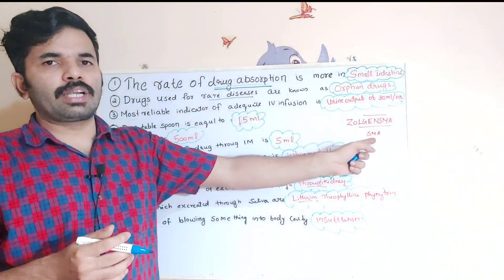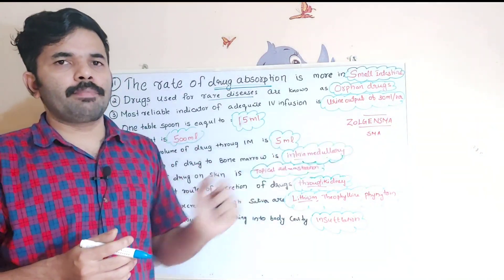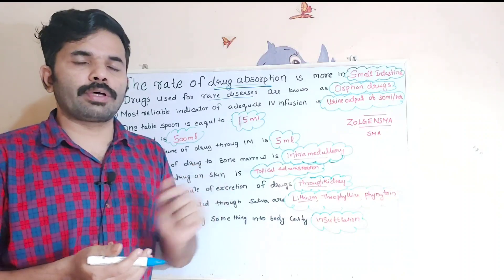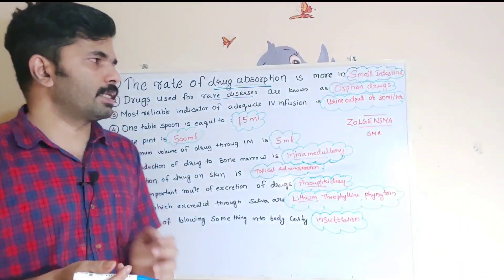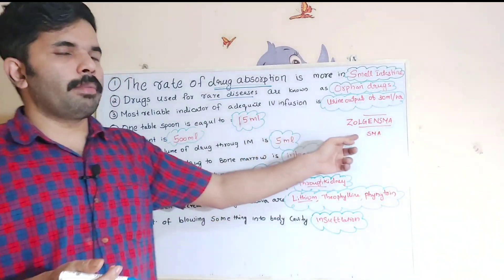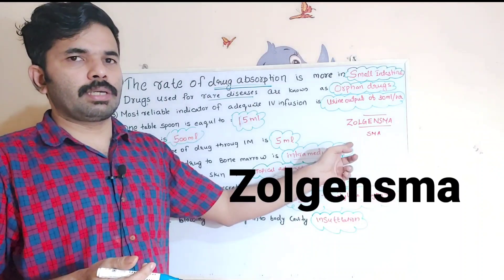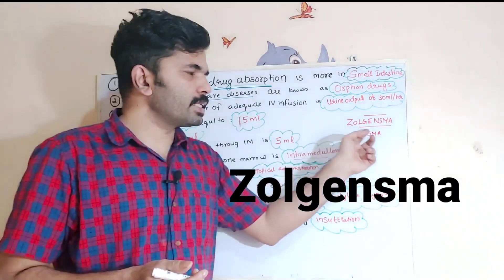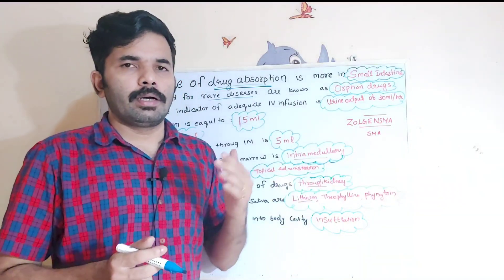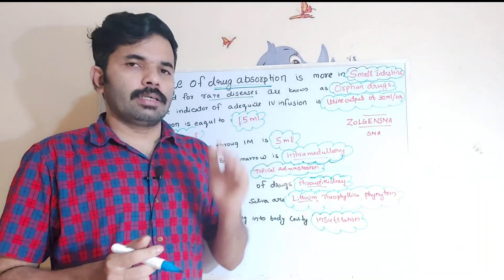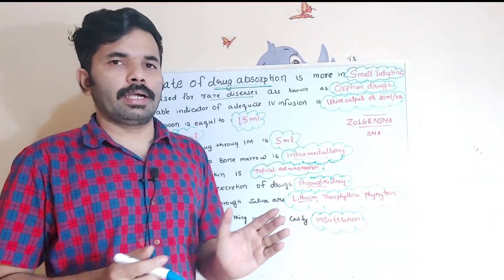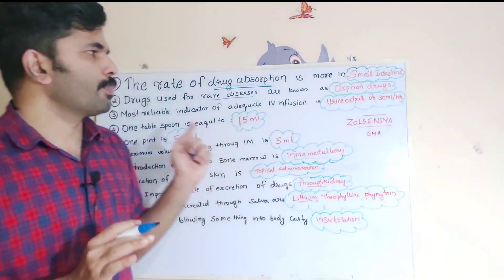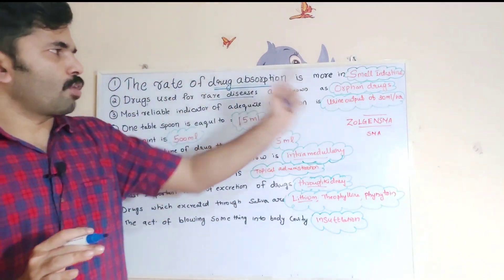Drugs used for rare diseases are known as orphan drugs. An example of a rare disease is spinal muscular atrophy.